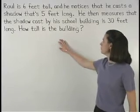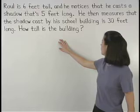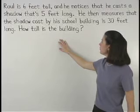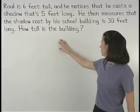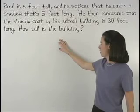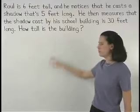Raul is six feet tall and he notices that he casts a shadow that's five feet long. He then measures that the shadow cast by his school building is 30 feet long. How tall is the building?